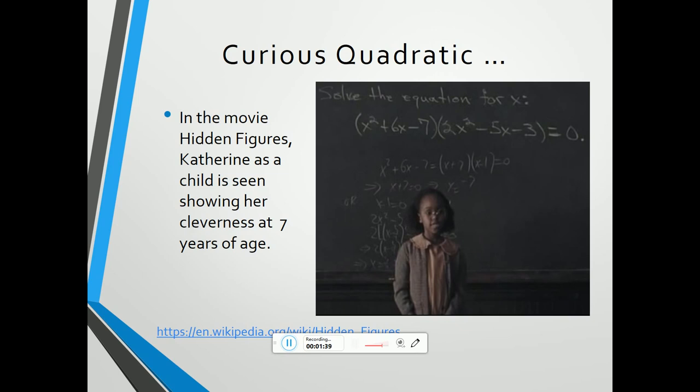That means it can be solved, because as the child in the movie says, x squared plus 6x minus 7 equals 0, or 2x squared minus 5x minus 3 equals 0. You can only get a result of 0 from a product of two numbers if one of the numbers is 0. Well, both could be 0, I suppose.